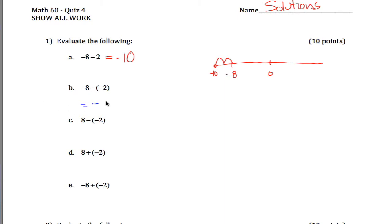So really what this question is asking you is what is negative 8 plus 2. Negative 8 plus 2, you're starting over here at negative 8, except when you're adding you move to the right. So what we get is negative 6.